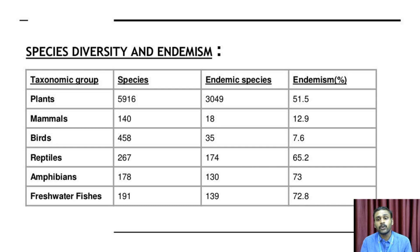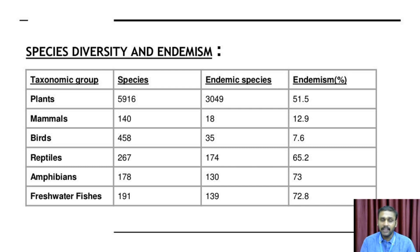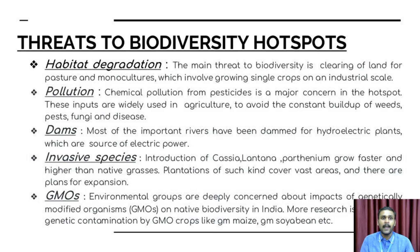In the Western Ghats, key species groups include mammals, reptiles, and freshwater species. Around 73% of freshwater species in this region are endemic.